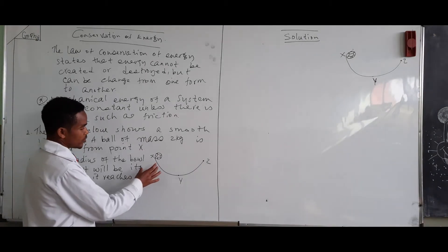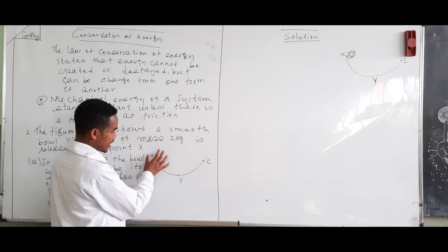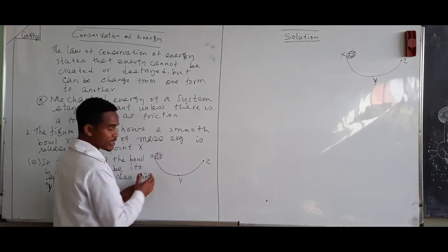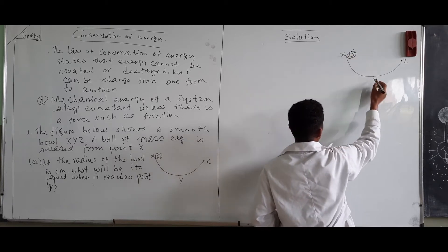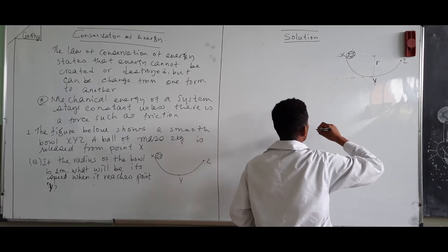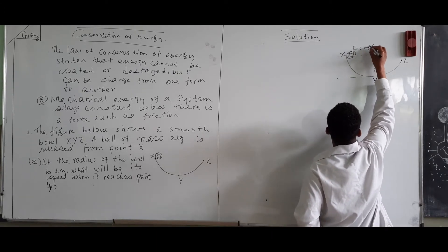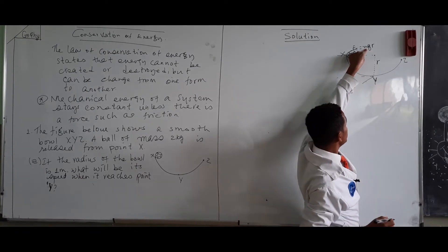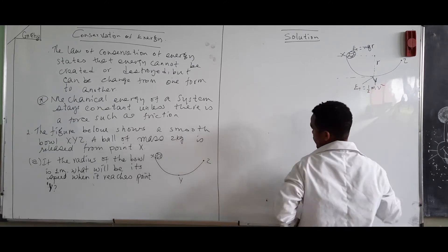For example, at this point the object has maximum potential energy, and when it comes down the potential energy decreases and becomes zero at the bottom. This means the energy is changed from potential energy into kinetic energy. At this point the height is equal to the radius R, so it has maximum gravitational potential energy. Total energy at this point equals MgR. When we come to the bottom, all of MgR is converted into kinetic energy, so total energy equals ½mv².